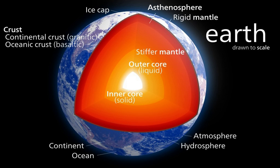Earth's outer core is a fluid layer about 2,400 km thick, composed mostly of iron and nickel, that lies above Earth's solid inner core and below its mantle. Its outer boundary lies 2,890 km beneath Earth's surface. The transition between the inner core and outer core is located approximately 5,150 km beneath the Earth's surface. Unlike the inner core, the outer core is liquid.